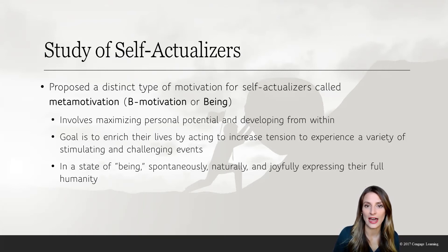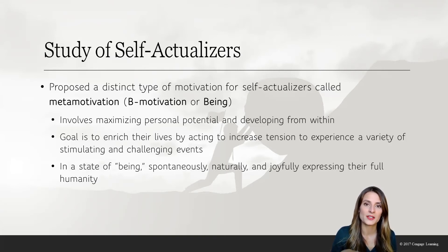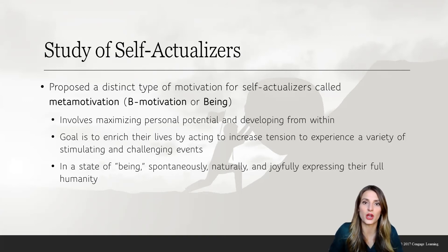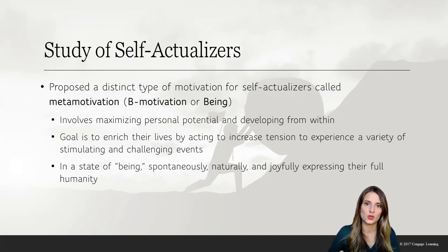Maslow believed that self-actualizers were different from the rest of the population — motivated by a slightly different force. He called this special type of motivation B-motivation, where the B stood for being. This metamotivation involves maximizing one's potential and developing from within — actualizing the self, knowing who you are and bringing that to fruition. The goal for self-actualizers is to enrich their lives by constantly seeking new challenges. Each challenge creates tension, and that tension is what motivates them. For self-actualizers, the tension is a good thing — it's what drives them and keeps them going.